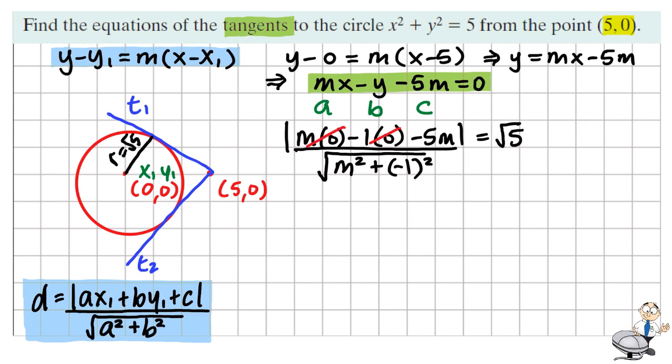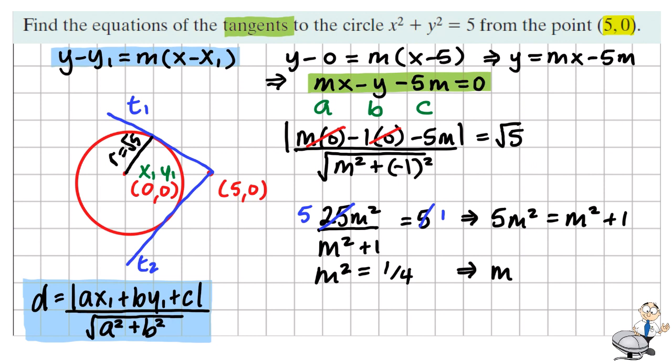Now anything multiplied by zero is zero. So we're going to square both sides and we see that 25m squared over m squared plus one is equal to five. Multiplying both sides by m squared plus one gives us five m squared equals m squared plus one. Manipulating this simple equation, we see that m squared equals a quarter. So that means m must be plus or minus a half.